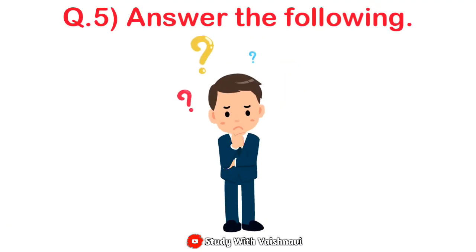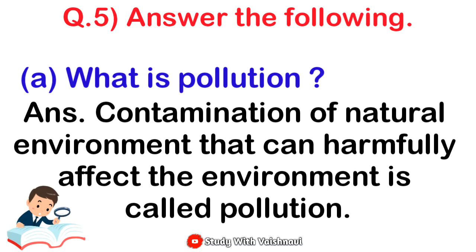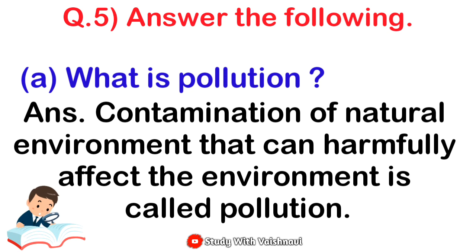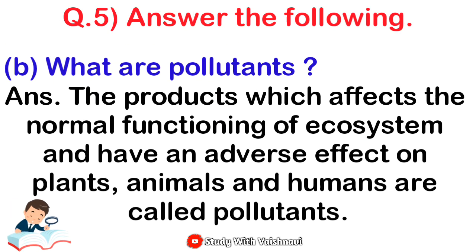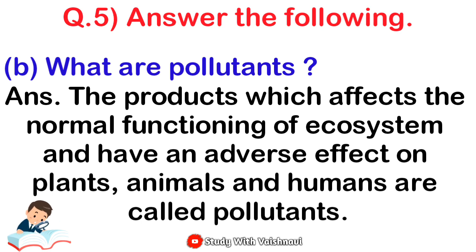Let's move to question number five: answer the following. First: what is pollution? Answer: contaminating of the natural environment that can harmfully affect the environment is called pollution. Next: what are pollutants? Answer: the products which affect the normal functions of the ecosystem and have an adverse effect on plants, animals, and humans are called pollutants.